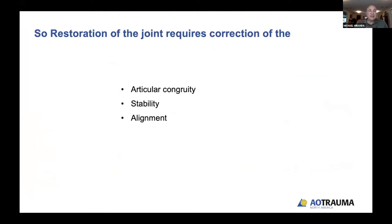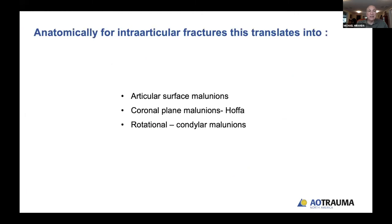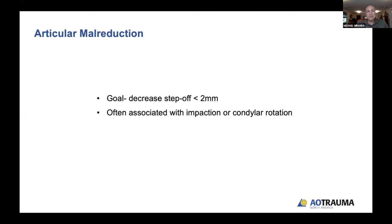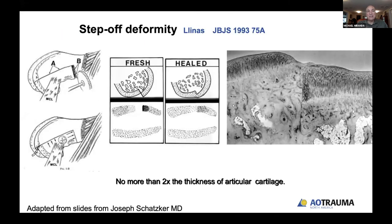Back to the joint itself: we need to create articular congruity, stability, and recreate the alignment. Malunions manifest as articular surface malunions, coronal plane malunions like Hoffa, or rotational and condylar malunions. For articular malreduction, the goal is to decrease the step-off to less than two millimeters. Often seen in combination with impaction or condylar rotation, these need to be addressed. We cannot accept a step-off deformity more than two times the thickness of the articular cartilage or we'll run into problems with degradation.